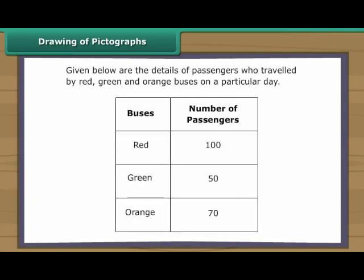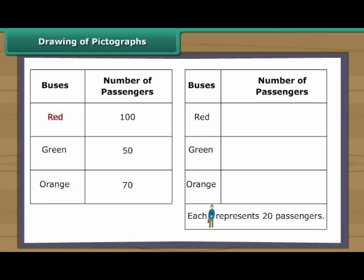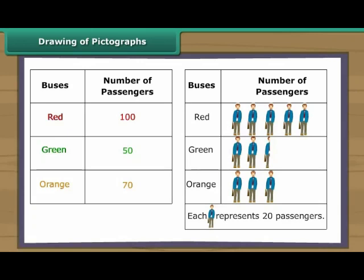Drawing of pictographs: Let us now draw a pictograph with the help of the given data. We use the picture of a travelling man to represent the bus passengers. As the numbers are large, we use one picture to represent 20 passengers. The red bus carried 100 passengers; five pictures will represent 100 passengers. The green bus carried 50 passengers: represent 40 passengers with two pictures and the remaining 10 passengers with half a picture. The orange bus carried 70 passengers: represent 60 passengers with three pictures and the remaining 10 passengers with half a picture.